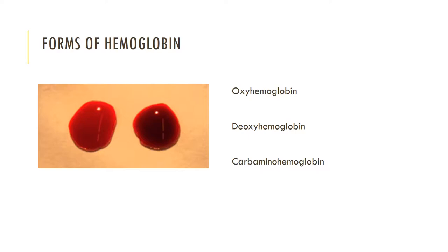When heme is bound to oxygen, it is called oxyhemoglobin and the blood becomes bright red. When heme is not bound to oxygen, it is called deoxyhemoglobin and the blood becomes dark red. Hemoglobin bound to carbon dioxide is called carbaminohemoglobin and has a distinctive bluish color.